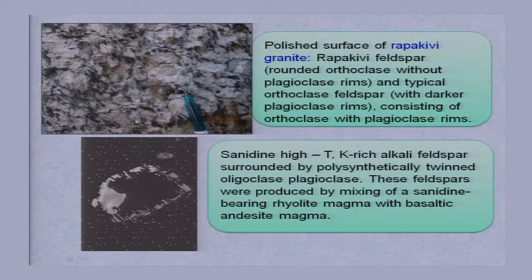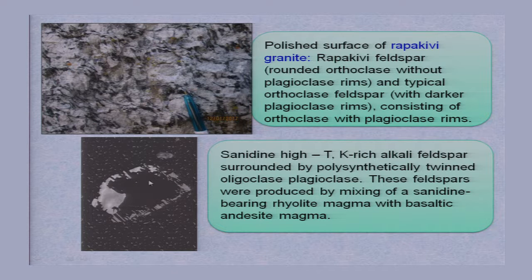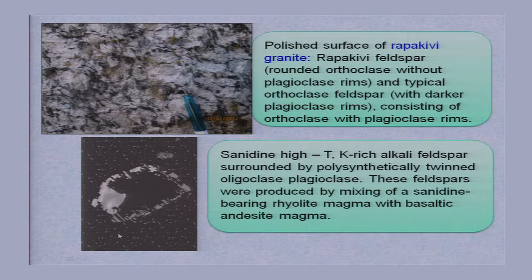How does this Rapakivi texture look under the microscope? It shows Rapakivi texture. Here, sanidine is a high-temperature feldspar — rich alkali feldspar surrounded by polysynthetically twinned strips of oligoclase.